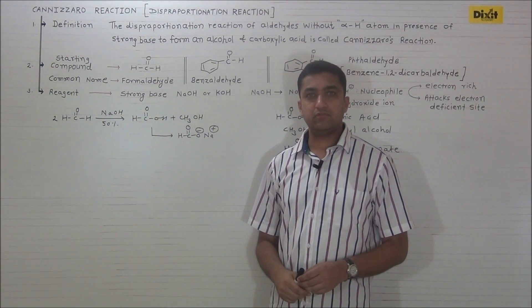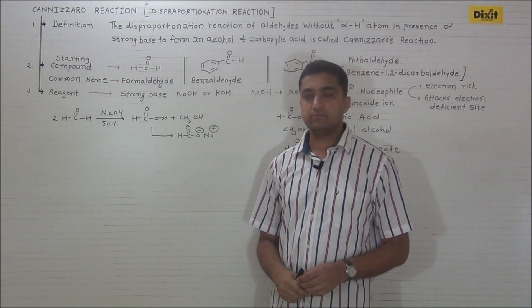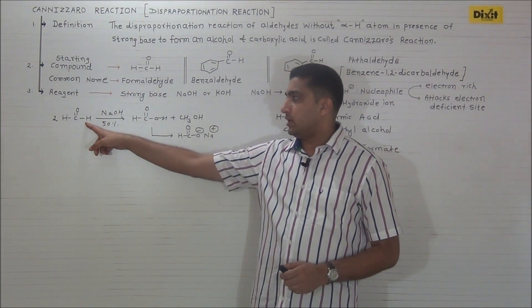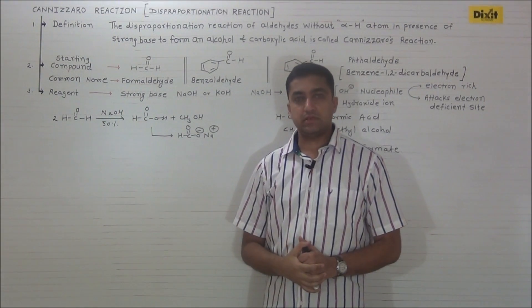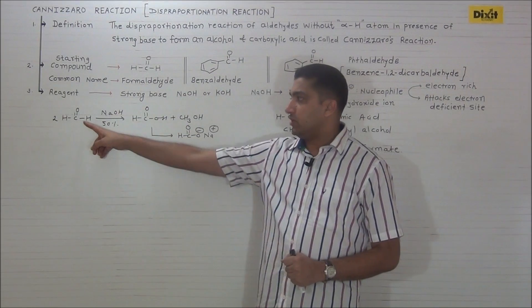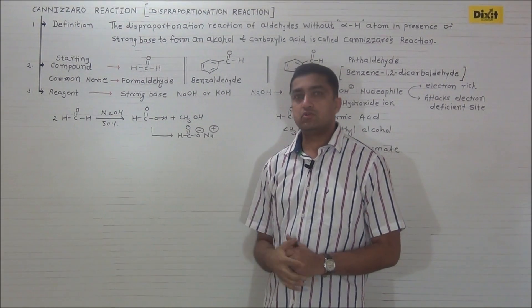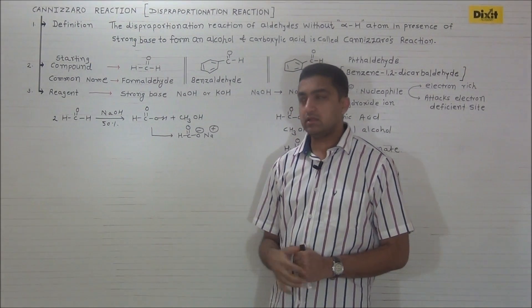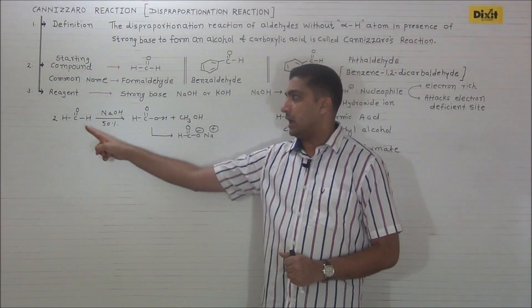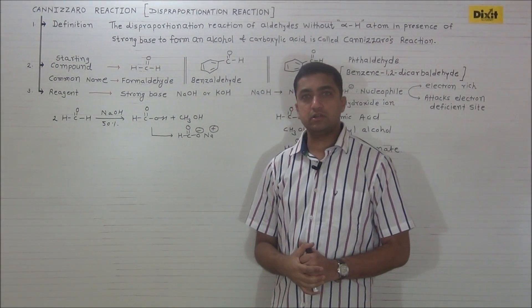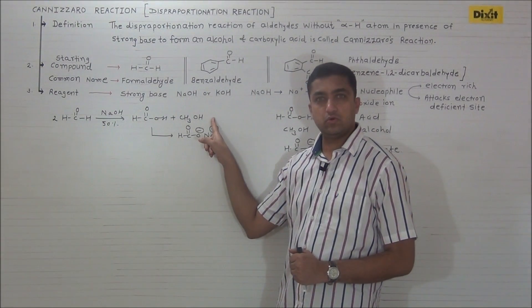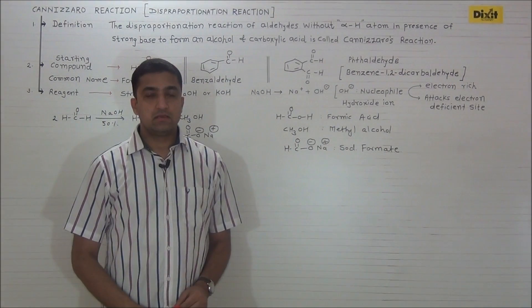Let us discuss an example of Cannizzaro reaction. Two molecules of formaldehyde in presence of strong base sodium hydroxide — one molecule undergoes oxidation to formic acid and then sodium formate, and one molecule undergoes reduction to form methyl alcohol.